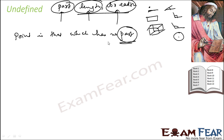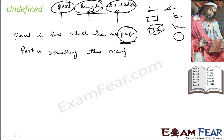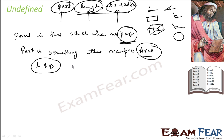If you want to define 'part,' let's try: part is something that occupies area. But now 'area' is also not defined. Again you need to define area. To define area you might say something which has length and breadth — but then those are undefined too. To define one undefined term you have to use another undefined term, and that chain is endless. It is an endless chain.